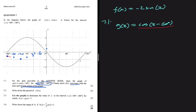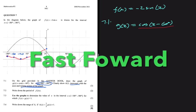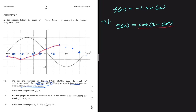Joining these points, we can already see the shape the graph is taking. Carrying on and joining the remaining points, the graph takes this shape — it doesn't look as smooth as f(x) since it's freehand, but you can clearly see the shape, the turning points, and all the intercepts. The turning point coordinates are (60°, 1) and (-120°, -1).